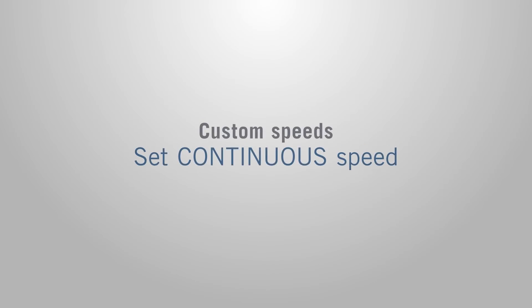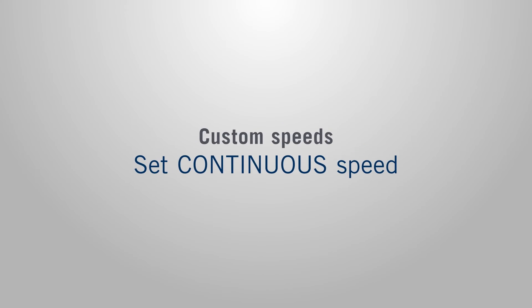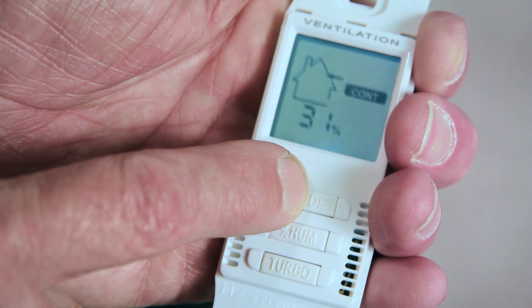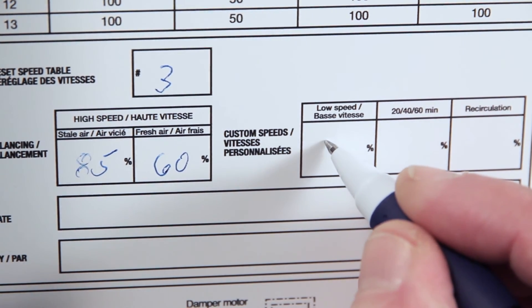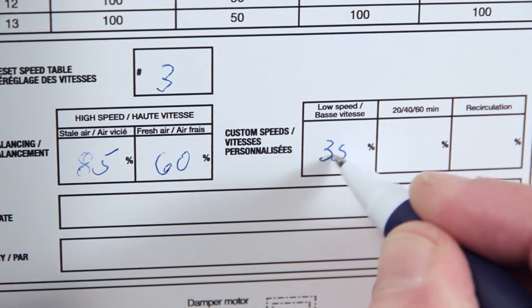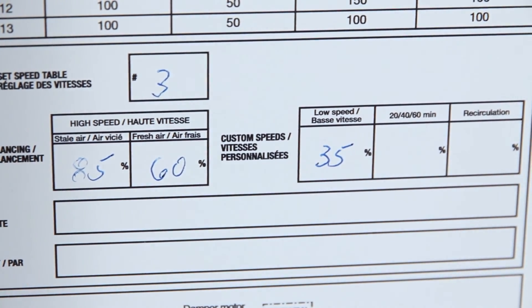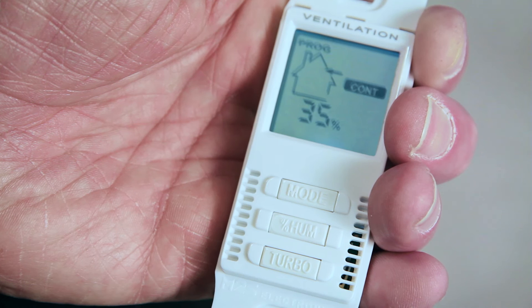If you have chosen custom speed, adjust the airflow to the desired CFM value. Press the upper button to raise the value. Take note of the setting value at this step, as it will disappear by pressing the accept button. Press the middle button to accept the chosen percentage.